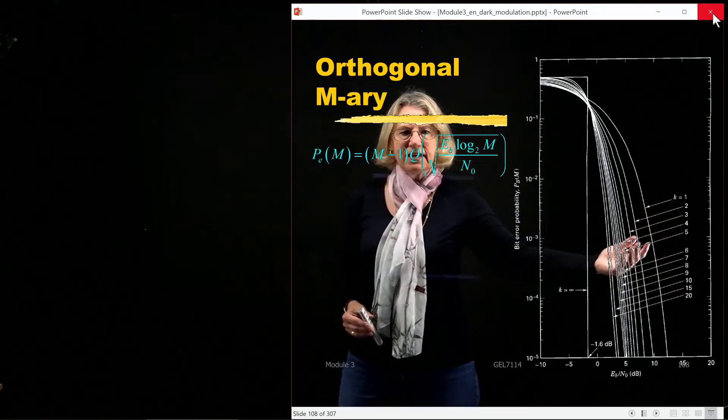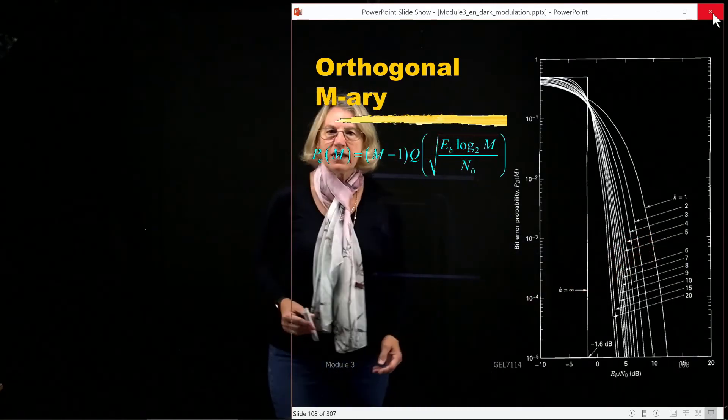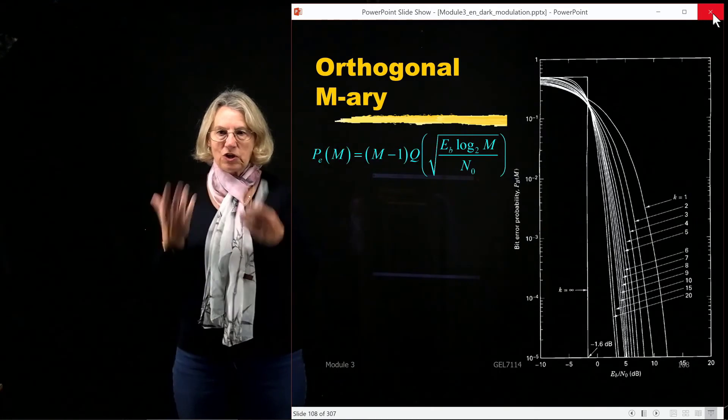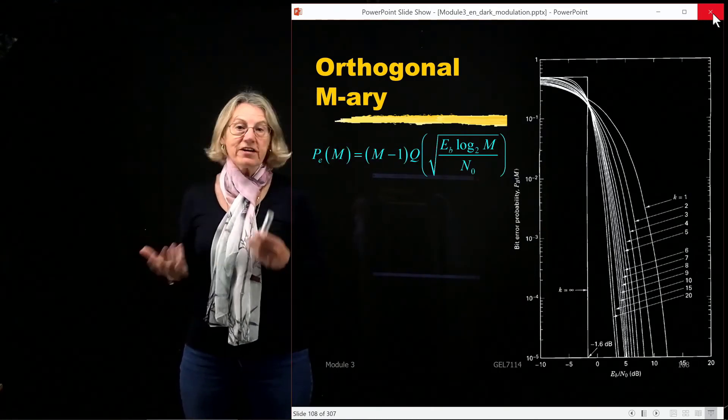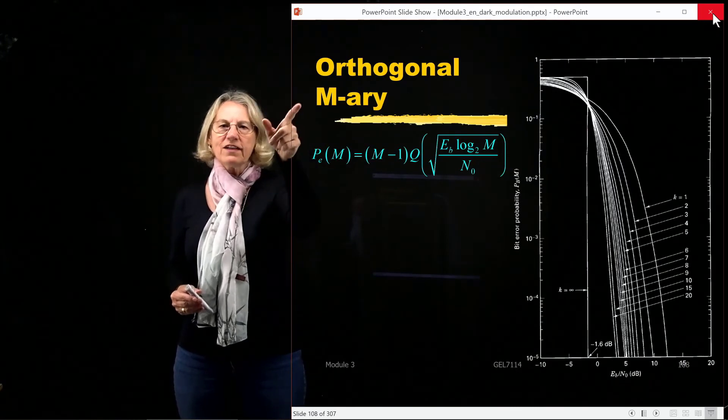and as we increase the number of k and m is equal to 2 to the k in this parameterization, we can see that the bit error rate is getting better and better as we increase the number of symbols. So this is something very special for FSK,